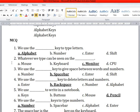Then number 2, whatever we type can be seen on the, options are mouse, keyboard, monitor, or CPU. What is the right answer? Yes, monitor. Whatever we type can be seen on the monitor. Monitor is our output device.